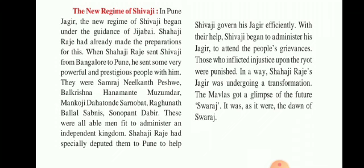They were: Samaraj Nilkanth Peshwe, Balakrishna Hanmate Muzumdar, Mankoji Dhan Tore Sarnobant, Raghunath Balal Sabnis, and Sanopant Dabir. These were all able men, fit to administer an independent kingdom. Shahaji Raje had specially deputed them to Pune to help Shivaji govern his Jagir efficiently.